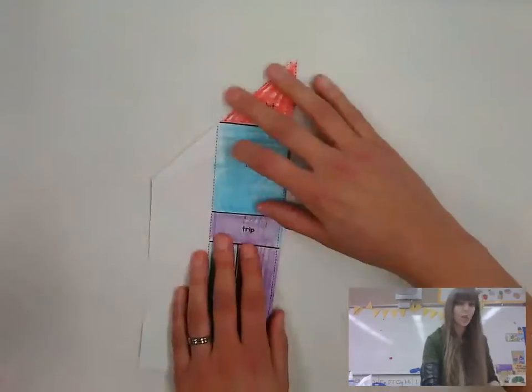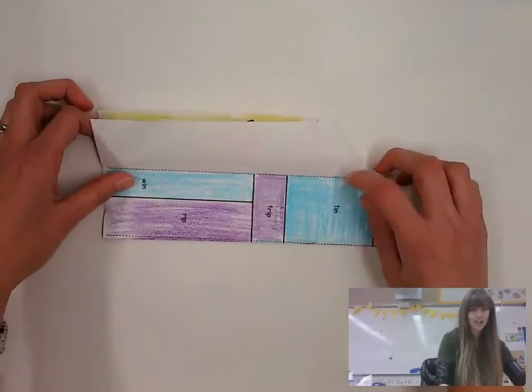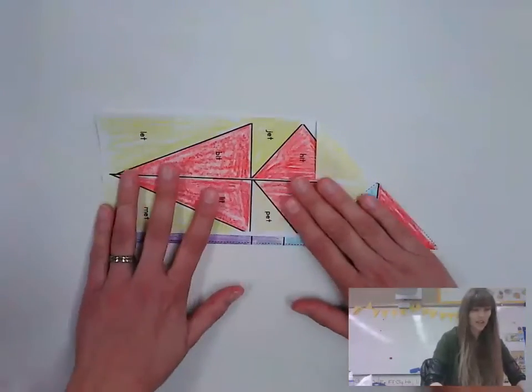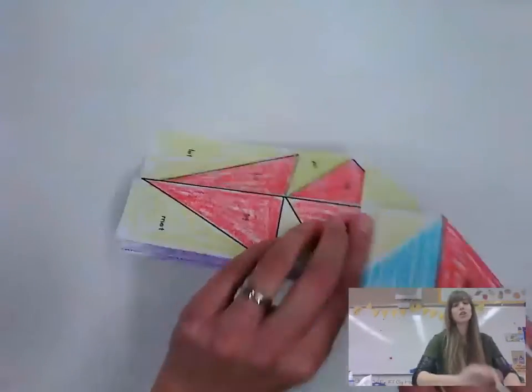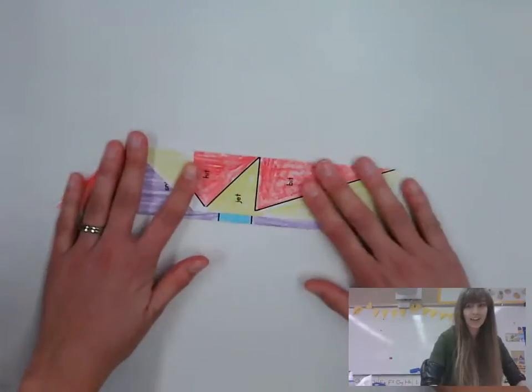Then you're going to take one of the wings, okay? And on that line, see that dotted line, you're going to fold it down one way. Then you turn it over and you fold it down the other way.